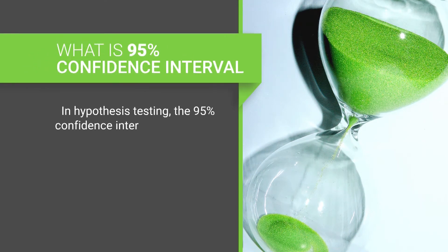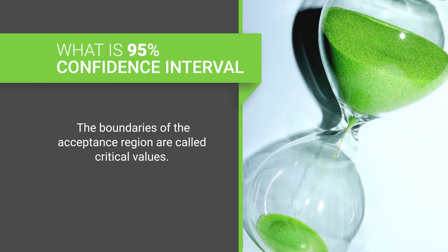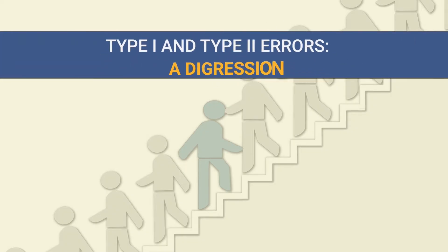In hypothesis testing, the 95% confidence interval is called the acceptance region, and the area outside it is called the critical region — the region of rejection of the null hypothesis. The boundaries of the acceptance region are called critical values. The null hypothesis is rejected if the value of the parameter exceeds the upper critical value or is less than the lower critical value.